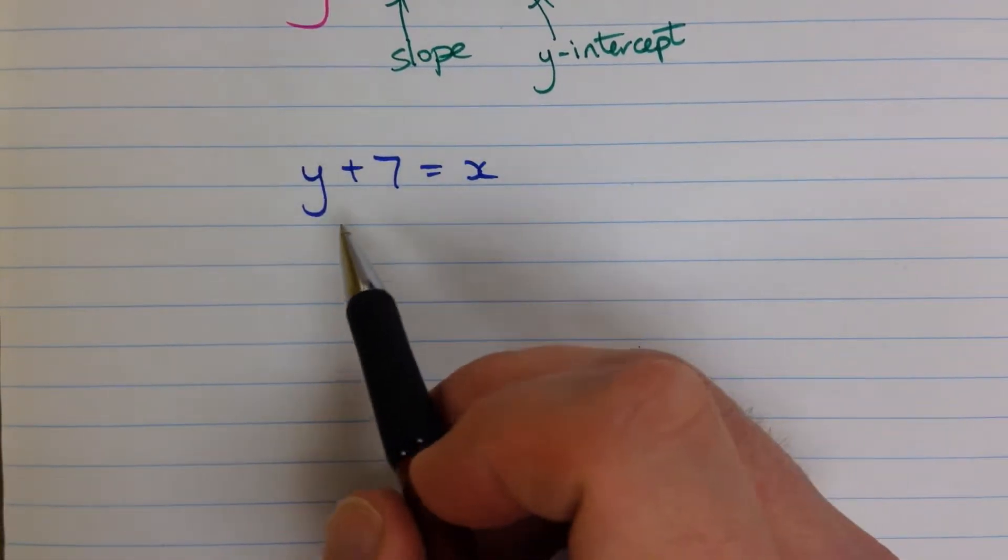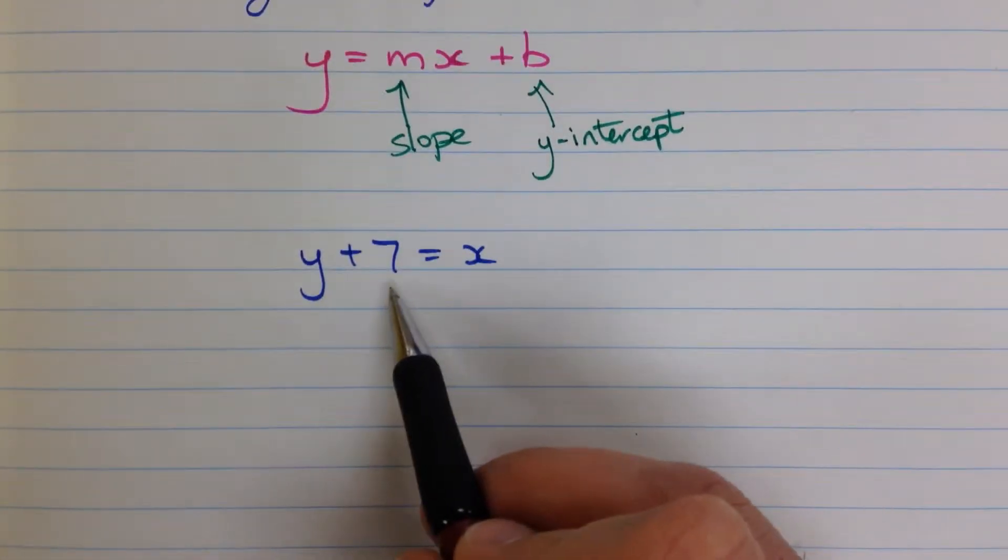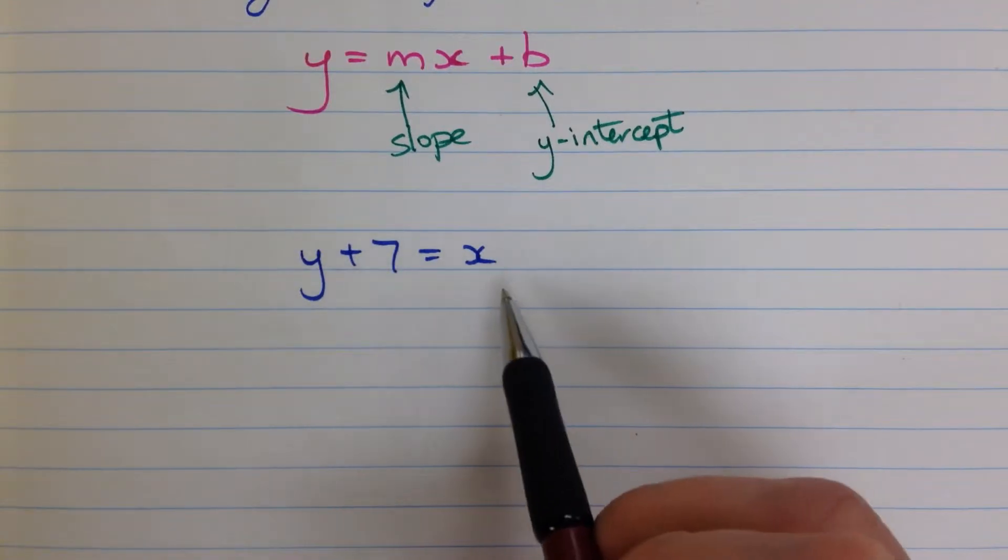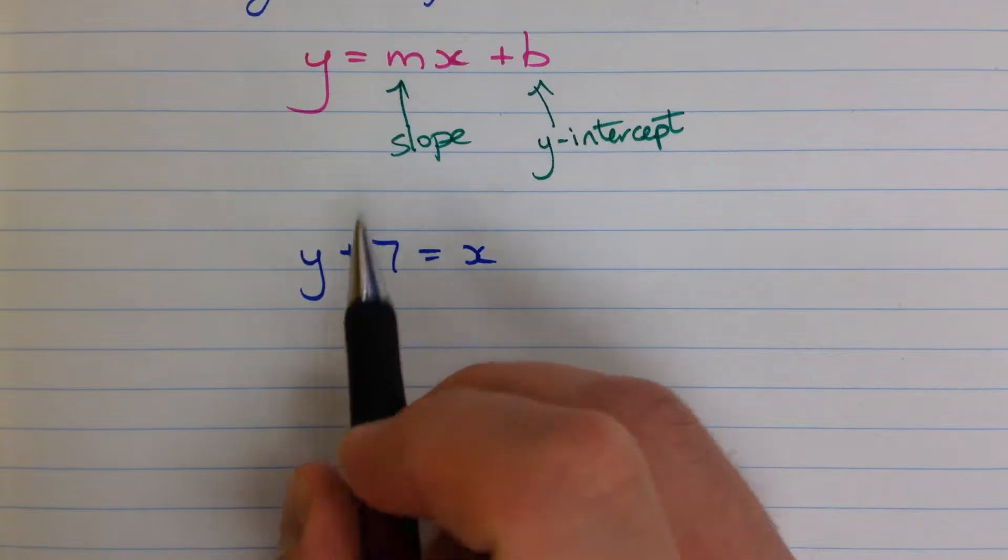Here we're almost there. We have y, but we have this extra plus 7 on the left-hand side. We don't really want that. And then we have an x over here, which is great. We want to get rid of this plus 7.